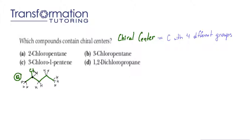This carbon is attached to chlorine, hydrogen, one carbon on the left, and one, two, three carbons on the right. Therefore, it is attached to four different groups and it is a chiral center, or stereocenter. So we will go ahead and put a little star next to it.